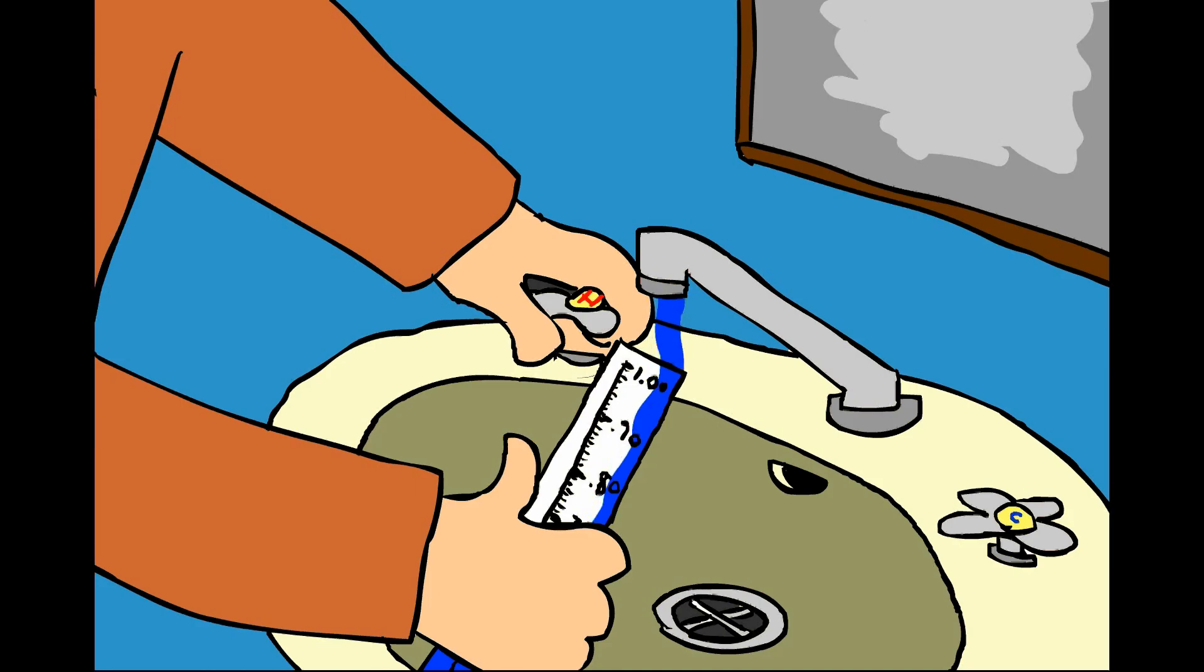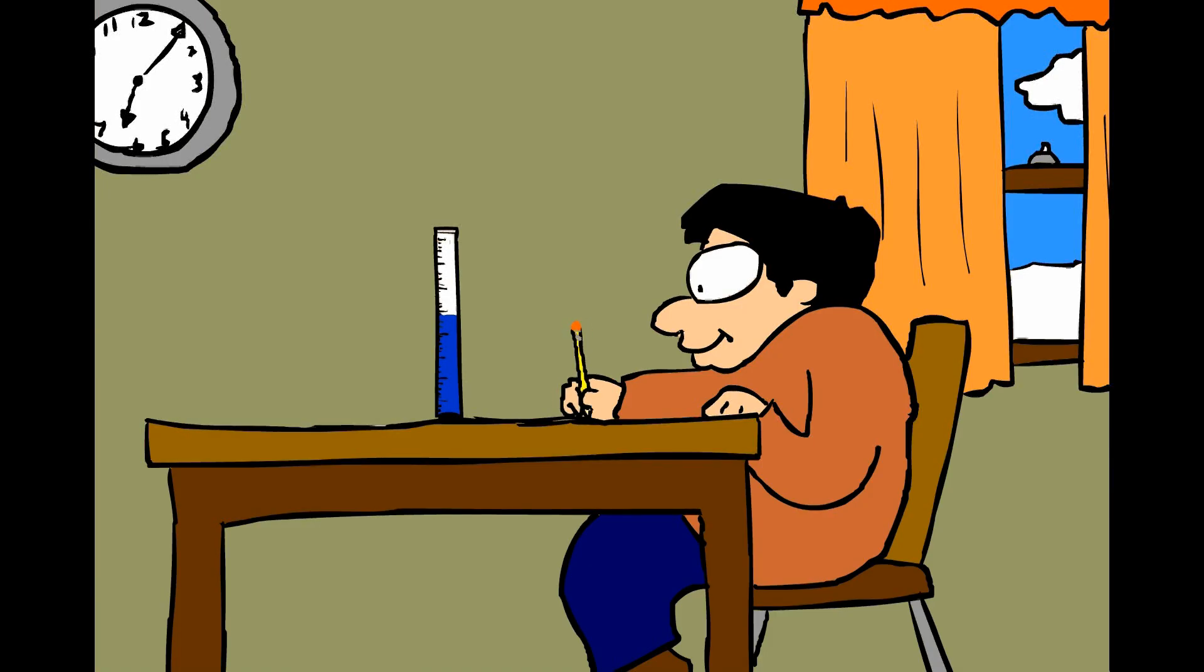Instead, we're going to add a pre-measured amount of warm water. If you use your inner measuring cylinder, you can measure exactly how much you will put in. Make sure to write it down.